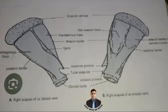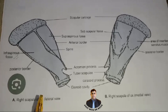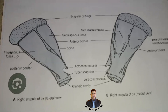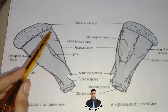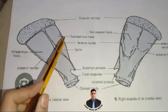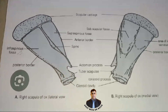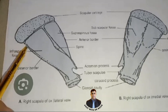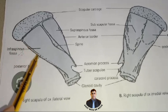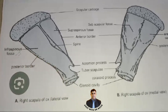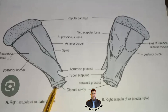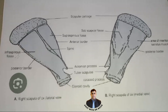Next, let's talk about the angles. There are three angles: cranial angle, caudal angle, and ventral angle. The cranial angle is thin and slightly concave and forms the scapular notch. The caudal angle is thick and palpable through the skin. The ventral angle carries a shallow glenoid cavity.